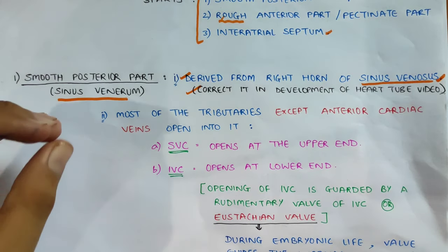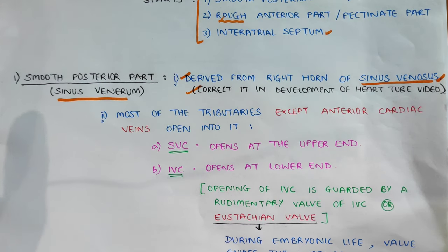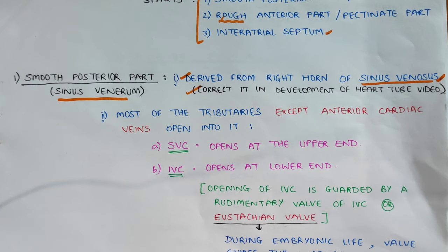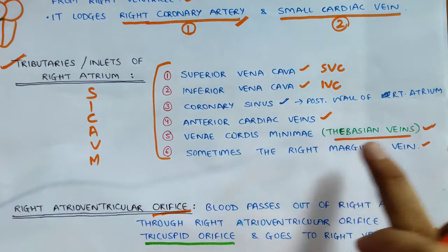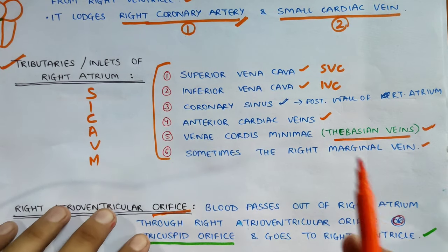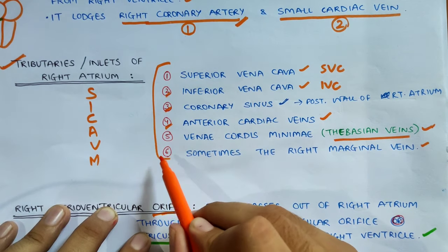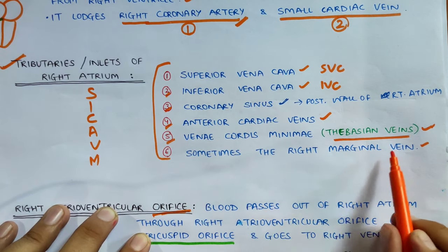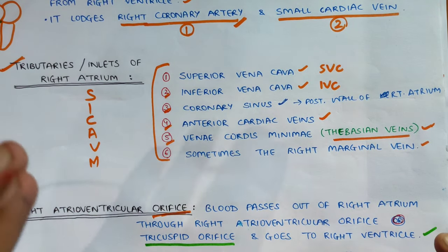Most of the tributaries, except the anterior cardiac veins, open into the smooth posterior part. The tributaries are: superior vena cava, inferior vena cava, coronary sinus, anterior cardiac veins, vena cordis minima, and sometimes the right marginal veins. So these six things open into the right atrium.